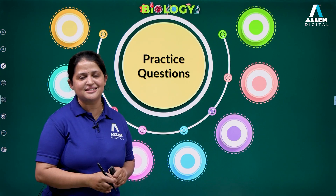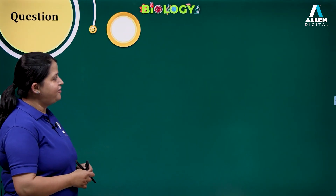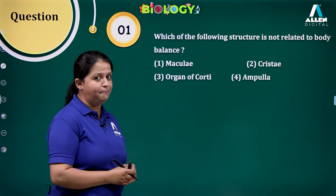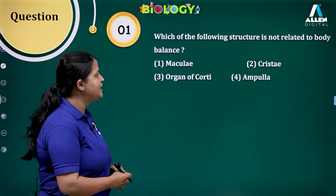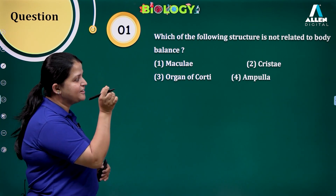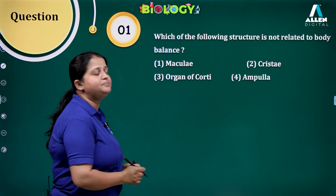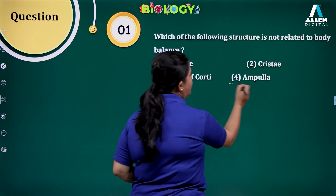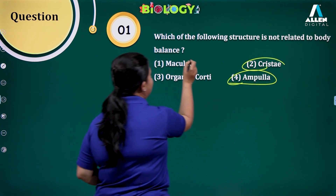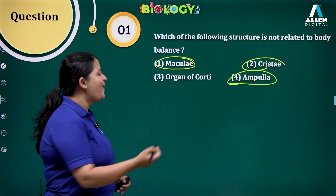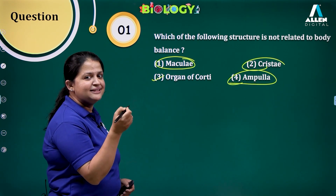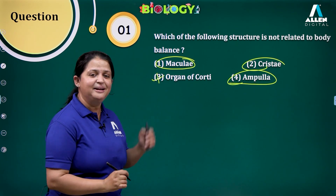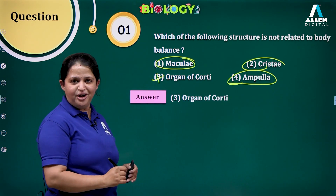Now a few questions related to the structure of the ear. First question: which of the following structures is not related to body balance? Macula and crista are receptors involved in balancing — macula is present in utriculus and sacculus, and crista ampullaris is present in the ampulla. These three are involved in balancing, whereas the organ of Corti is involved in hearing. So the answer is organ of Corti — it is not involved in balancing.